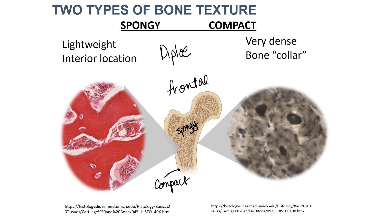Specifically, this word refers to spongy bone that is trapped between two layers of compact bone. So here are two layers of compact bone with spongy bone trapped between them. This is common to the flat bones like those in your skull. For flat bones, this diploe structure — which is kind of like a spongy bone sandwich — creates incredible strength, which you would want for the bones that protect your brain.